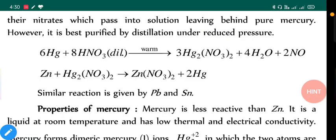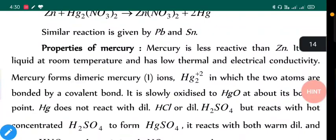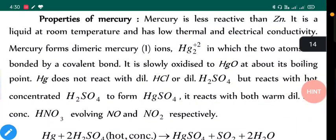Properties of mercury: Mercury is less reactive than zinc. It is a liquid at room temperature and has low thermal and electrical conductivity. Mercury forms dimeric mercury(I) ion Hg₂²⁺ in which two atoms are bonded by covalent bond. It is slowly oxidized to HgO at about its boiling point.